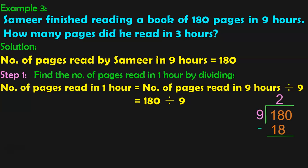Let us do this division. 180 divided by 9 equals 20. So, in 1 hour he has read 20 pages. The question is to find out how many pages did he read in 3 hours. Now, you know the value for 1 hour, so you will have to multiply it by 3 to find the answer for the number of pages he read in 3 hours.